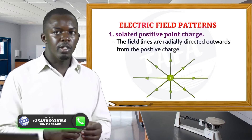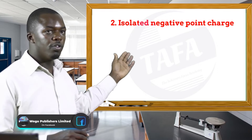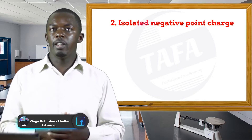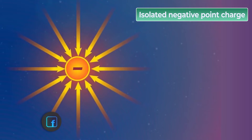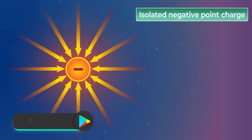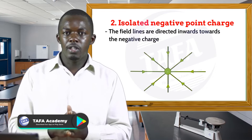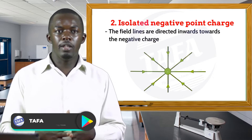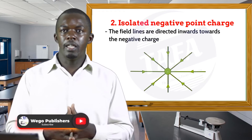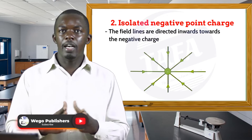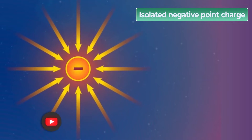The second electric field pattern is the isolated negative point charge. From this diagram the field lines are directed inwards towards the negative charge. This is because field lines always start from the positive charge and are directed towards the negative charge. So for the isolated negative point charge, the field lines are directed inwards.